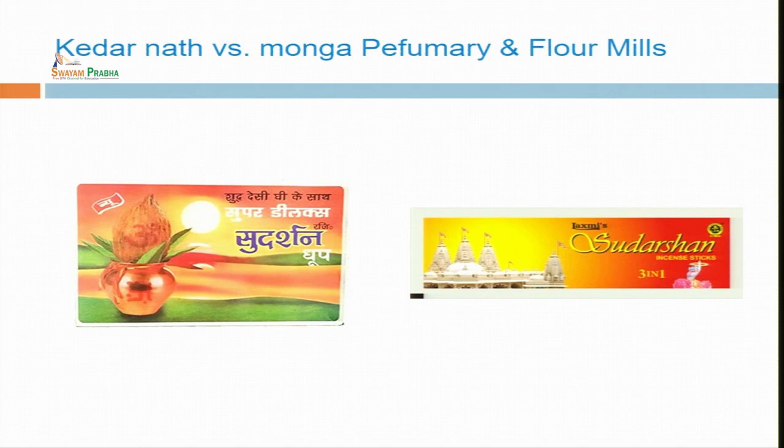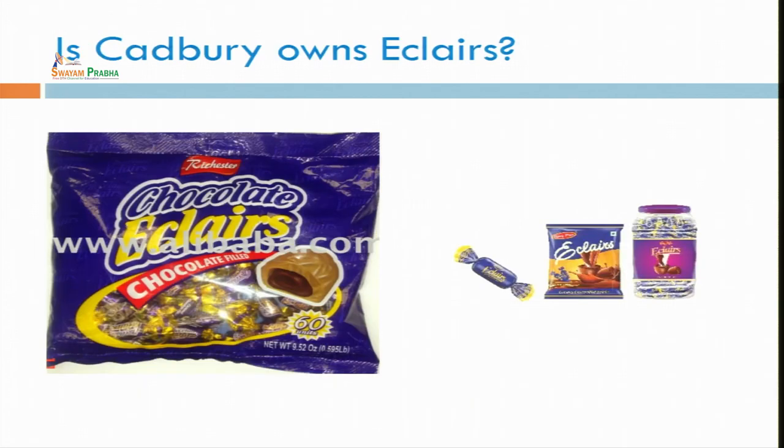Not only goods and services, but new types of non-conventional trademarks are coming — it may be on some tune, recipe, jingle, sari, or combination of colors. Ecclairs is a simple name, but Cadbury filed a case against a number of other companies claiming Ecclairs belongs to Cadbury. However, the court decided that Ecclairs is a combination of milk and chocolate — a generic word — and anyone can use this mark with their company. Now many companies are using Ecclairs — Parley is also using Ecclairs, and other companies use it as a generic word, just like chocolate.